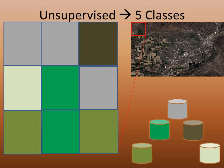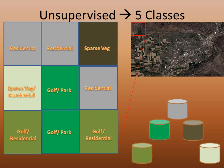The result of unsupervised classification is that the pixels in Ironwood are grouped into the five classes we specified. Note that no meaning other than the class identity, represented here by colors, has been assigned to these classes. The next step in an unsupervised classification would be for the user to assign meaning to these classes. Here is an example of some of the meanings that could be assigned to each class.